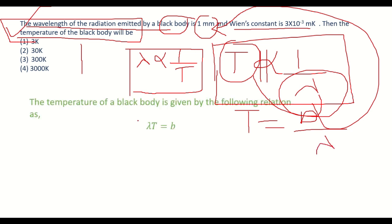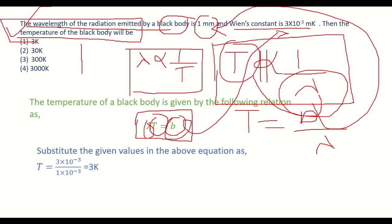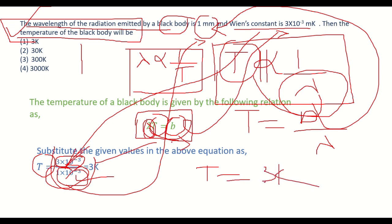The equation is λT = b, where λ is wavelength, T is temperature, and b is Wien's constant. Substituting values: T = b / λ, where λ = 1 mm = 1 × 10⁻³ m. Solving gives T equals 3 Kelvin, which is option A — the correct answer.